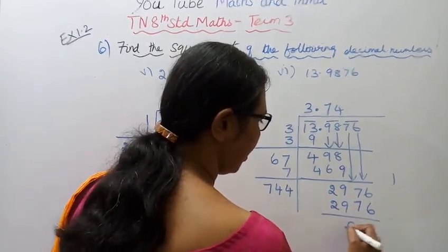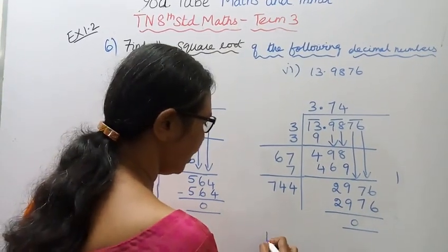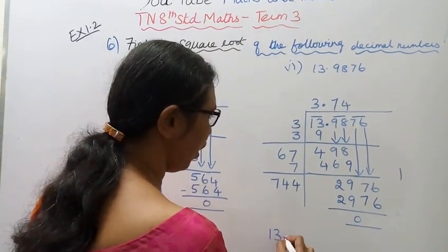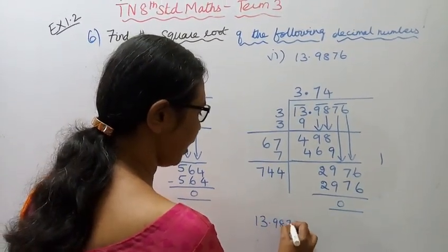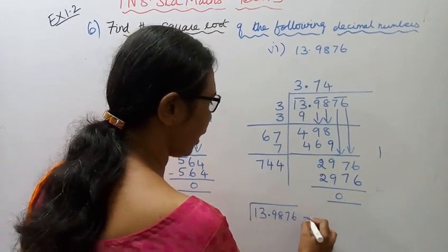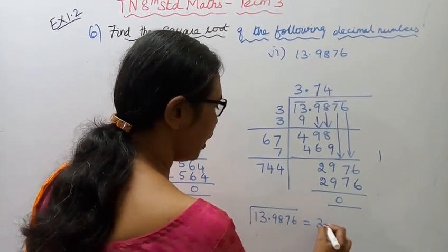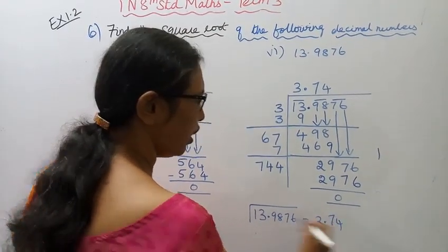Subtract to get 0. So for 13.9876, the square root is 3.74.